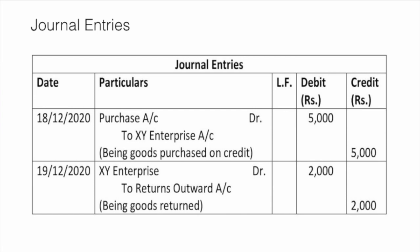In the journal book we will record: for the first transaction, Purchase Account debit to XY Enterprise — meaning Purchase Account is debited and XY Enterprise Account is credited with 5000. For the second transaction, as we return the goods, a new account comes into scene: XY Enterprise Account will be debited, and the new account is Returns Outward Account.